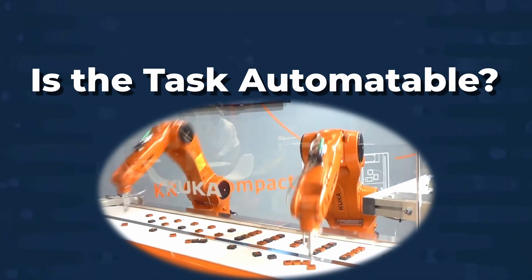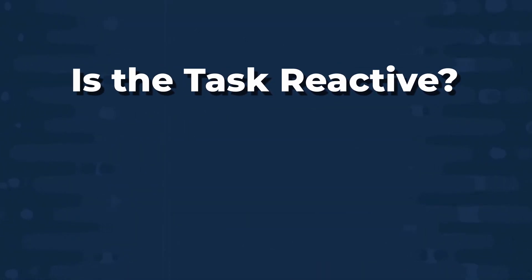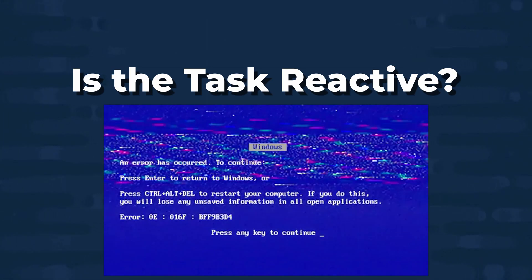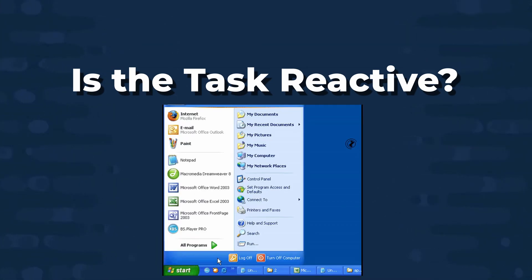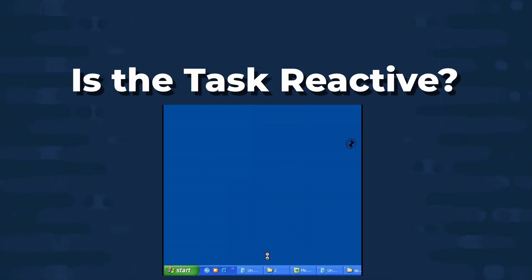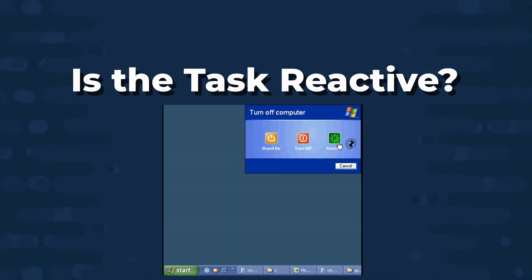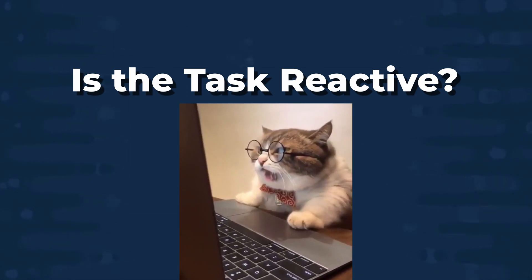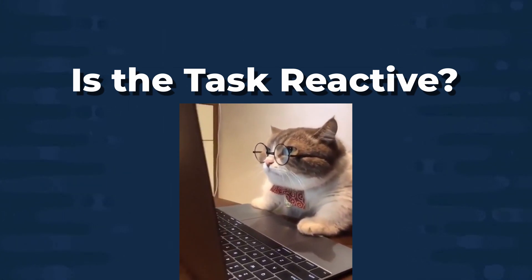The last thing to identify if a task is considered toil is if it's a reactive task rather than a proactive task. An example of a reactive task might be a server going down, a service going offline, and you get paged in the middle of the night to log in and fix it. This is a completely reactive task that you and your team want to avoid — you want to be doing proactive work to prevent these outages instead of having to fix them in the middle of the night.